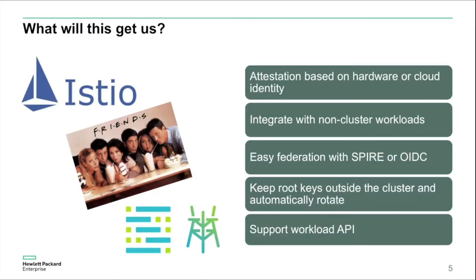What does integrating Spire with Istio really buy us? First and most importantly, it gets you attestation based on hardware or cloud identity. Istio doesn't have this by default, but with Spire and Istio working together, every node added to the Istio cluster and every workload running on that node can be attested down to its hardware identity using TPM, or its cloud identity using instance metadata. This will also help with integrating non-cluster workloads — a service running completely outside Kubernetes can get Spire certificates straight from Spire and then communicate with workloads running inside Istio.